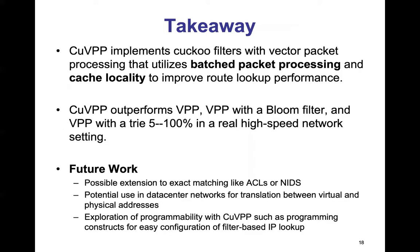In conclusion, here is a takeaway of our work. We developed QVPP, which uses cuckoo filters with vector packet processing that utilizes batched packet processing and cache locality to improve route lookup performance. Our evaluation shows that QVPP outperforms VPP, VPP with bloom filter, and VPP with tries by up to 55% in a real high-speed network setting.